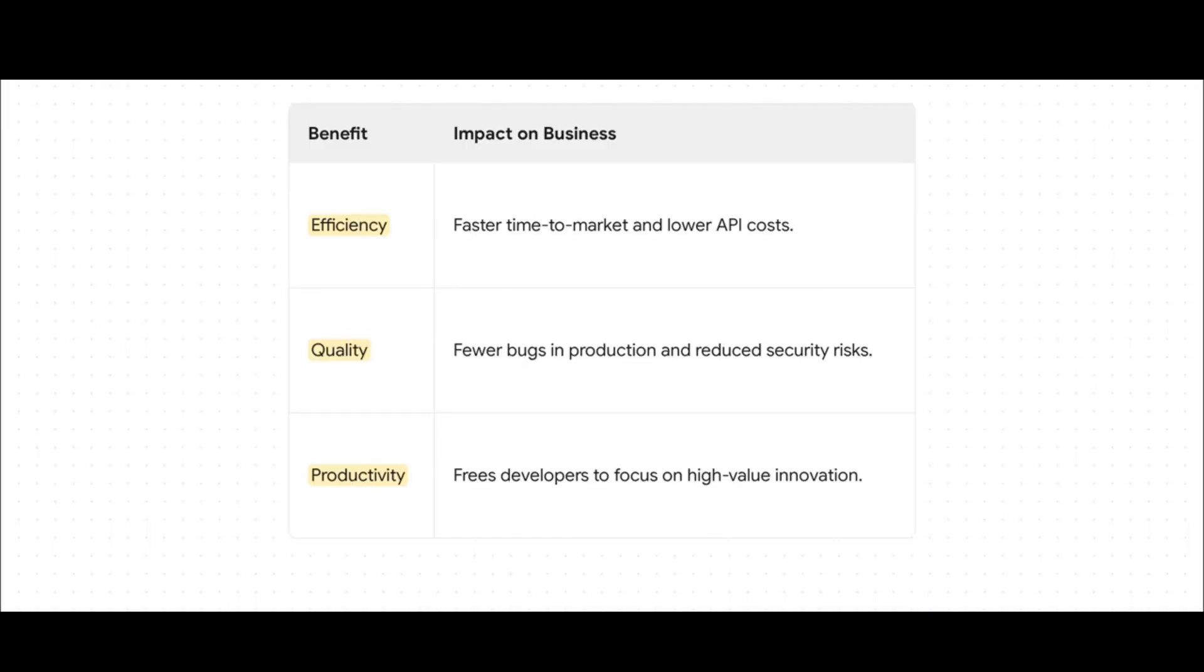When you put all these gains together they create this really powerful triple threat value proposition. You get efficiency, which means faster time to market and lower costs. You get quality, with fewer bugs making it into production and reduced security risks. And you get productivity, because it frees up your best developers to focus on high-value innovation instead of all the grunt work.